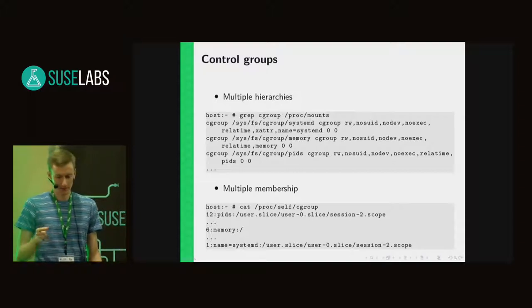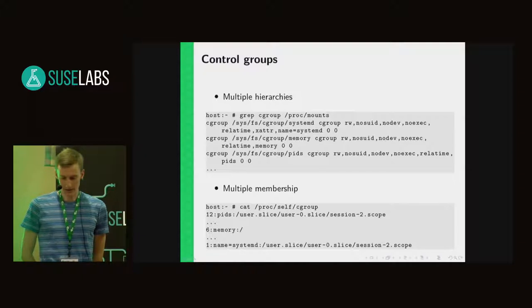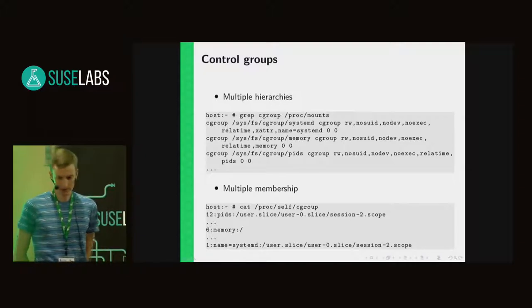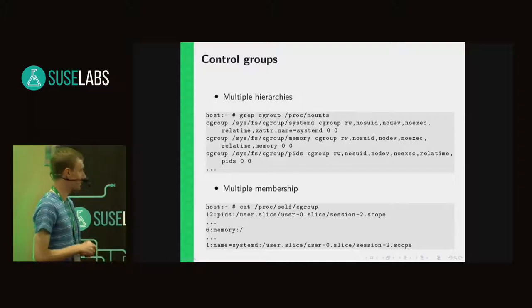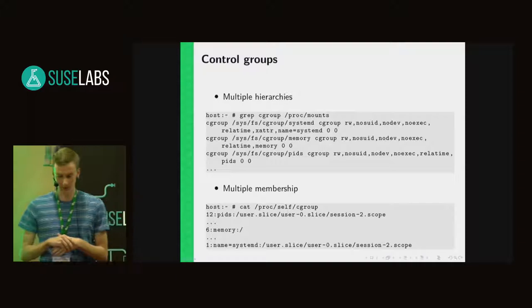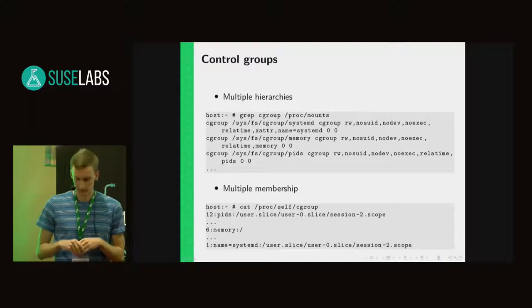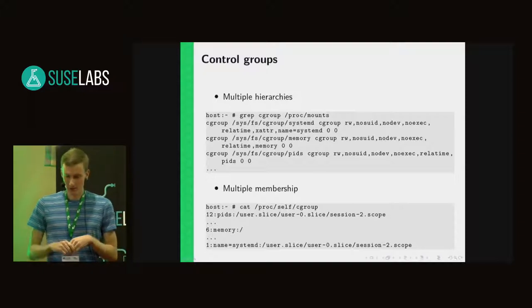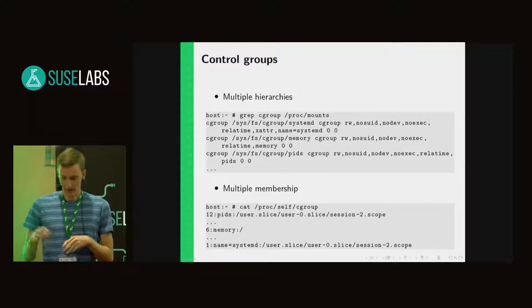Here you can see it on the screen, where the cgroup hierarchies are accessible via special file systems. There can be attached so-called controllers to these cgroups, which can apply some policies or somehow act on the processes in the cgroups. The controller attached to the cgroup hierarchy is passed as an option to the mount command. You can see here there are three different hierarchies.